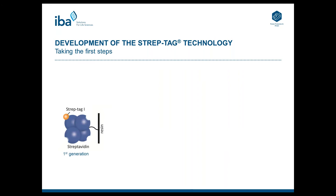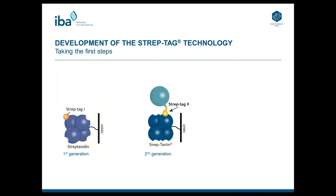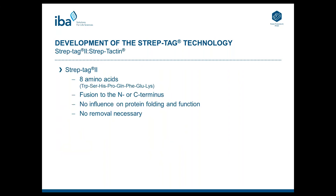All this together made the system particularly attractive for engineering an affinity purification system. In a first step, the StrepTech peptide was selected from a random peptide library as a peptide binding to the biotin binding site of Streptavidin. The advantage was that the peptide could be released from Streptavidin in a competitive manner, but the drawback was that it could be used only at the C terminus of a recombinant protein. So the peptide was systematically optimized and named StrepTech 2. StrepTech 2 is an 8 amino acids long peptide and can now be used at the N or C terminus of a recombinant protein.